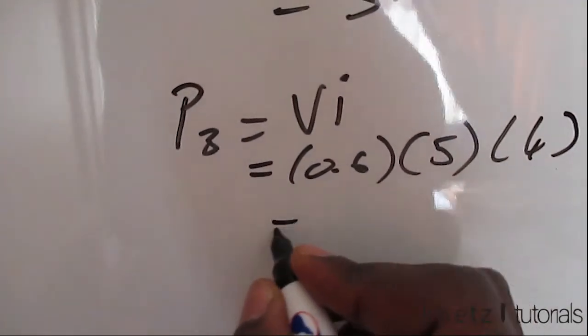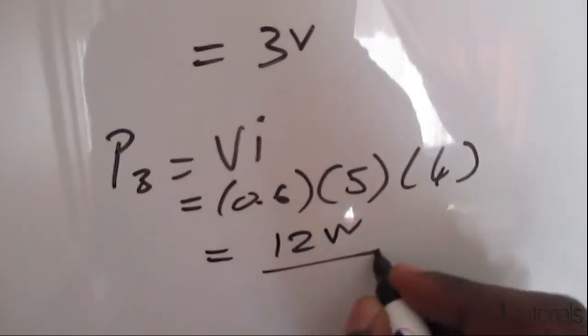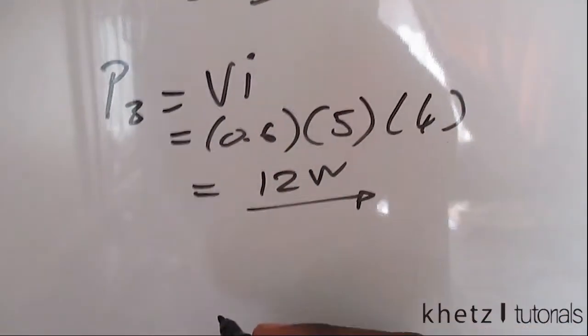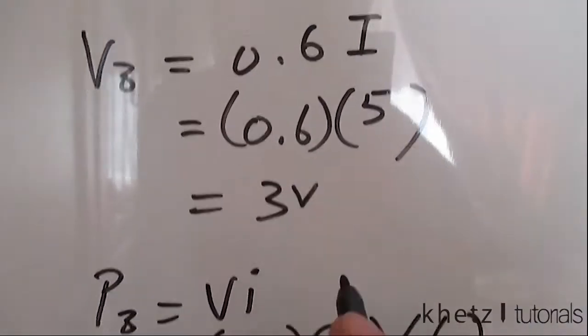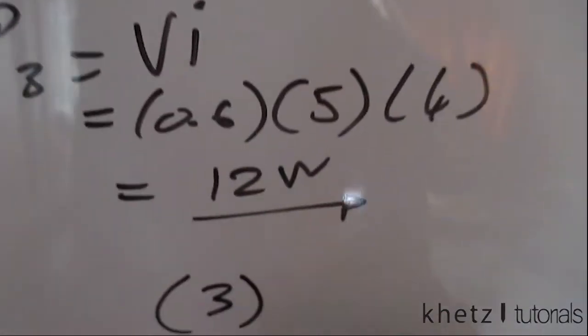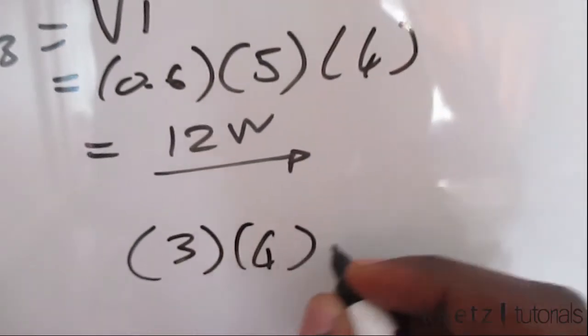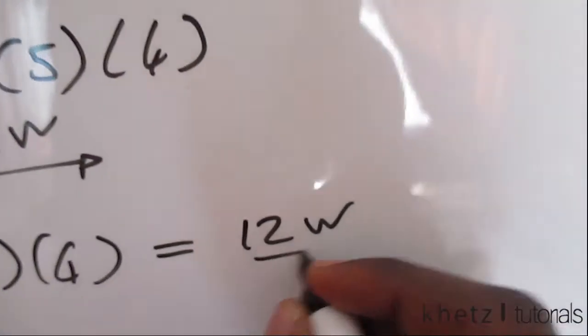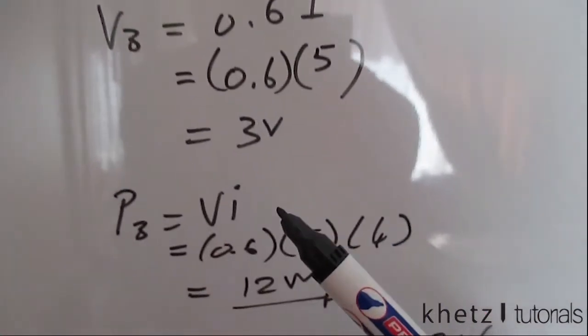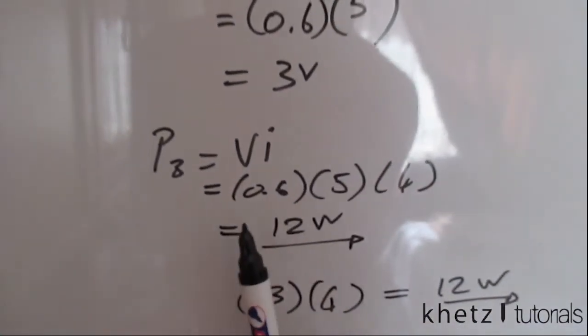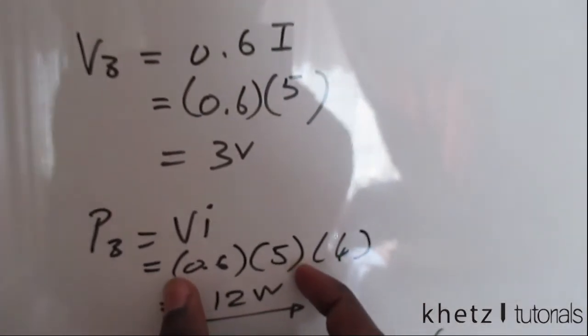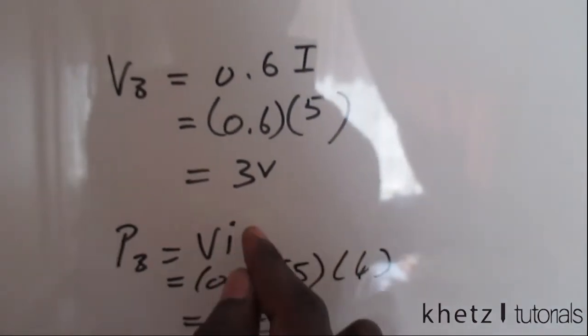Or you could use this formula directly and say this value which we calculated, which is 3, and the value of the current which passes through, which is 4, which will give you 12. This is basically the same thing. I was just breaking the problem up into finding the voltage first and then plugging it in. But you can do this at once. This part represents V, which is the value of the voltage. And this represents I in this formula.